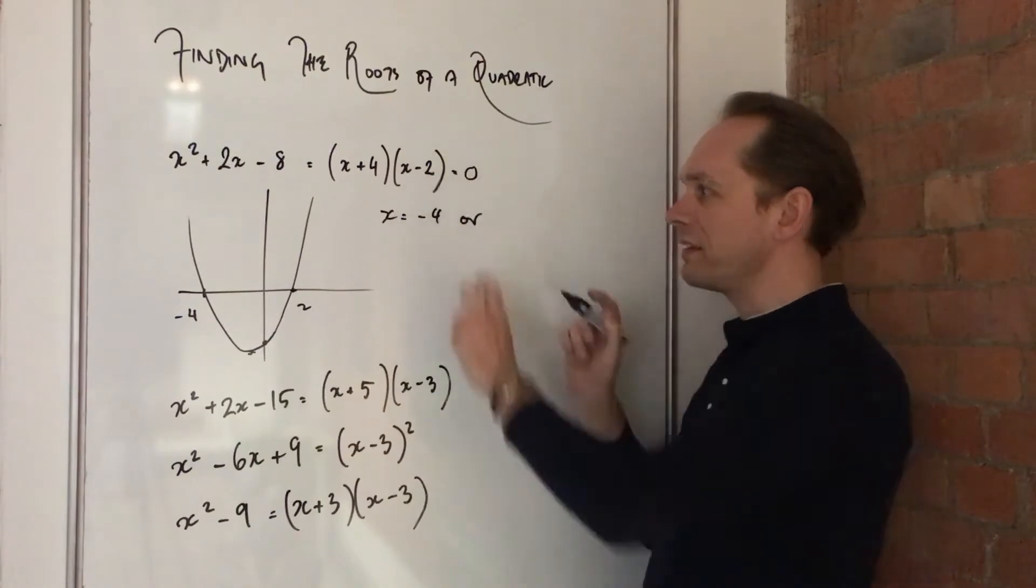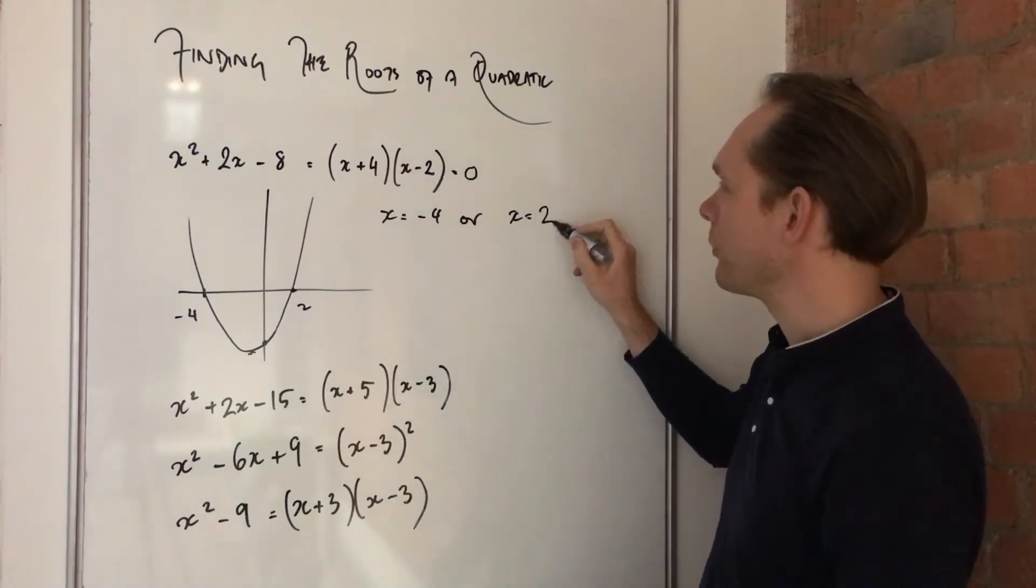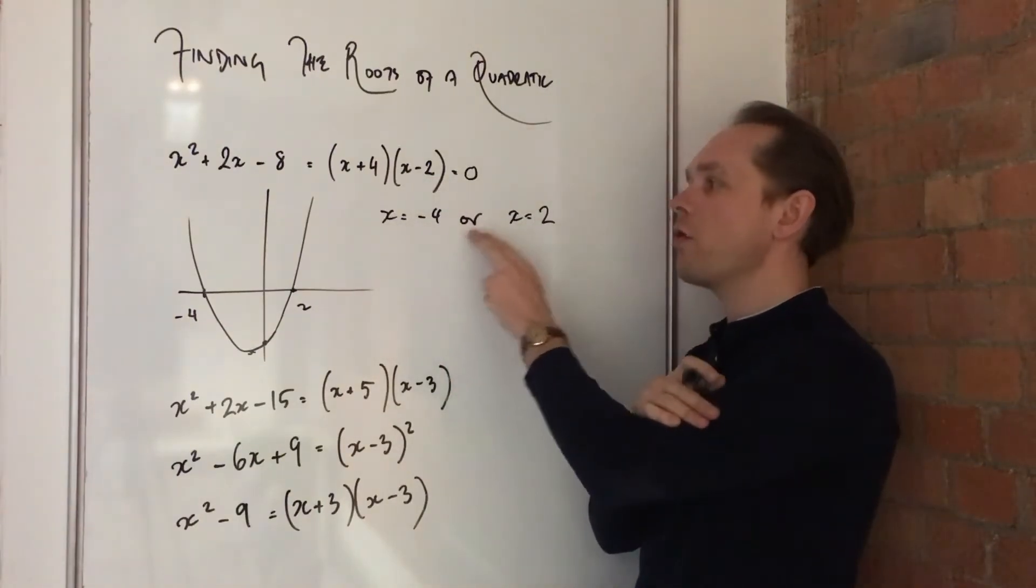Or, x minus 2 is zero, so x is 2. So we always write x is this, or x is that.